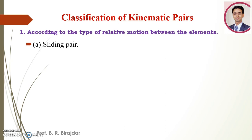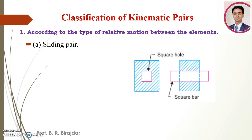First one: the sliding pair. When the two elements of a pair are connected in such a way that one can only slide relative to the other, the pair is known as the sliding pair. The sliding pair has completely constrained motion, meaning you get motion in one definite direction. One example is a rectangular rod in a rectangular hole — here a square bar slides inside a square hole.